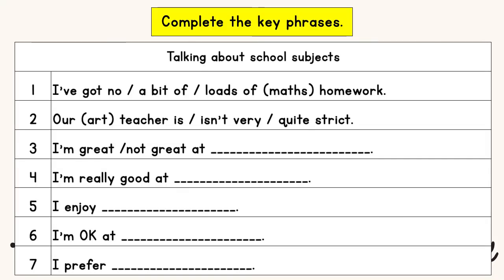So, you have watched the video. Now let's complete the key phrases. The first one: I have got no / a bit of / lots of maths homework. From the video, the answer is a bit of. Our art teacher is or isn't very or quite strict — the answer is very strict. I'm great or not great at — this is about science. Based on the video, the boy says: I'm not great at science.